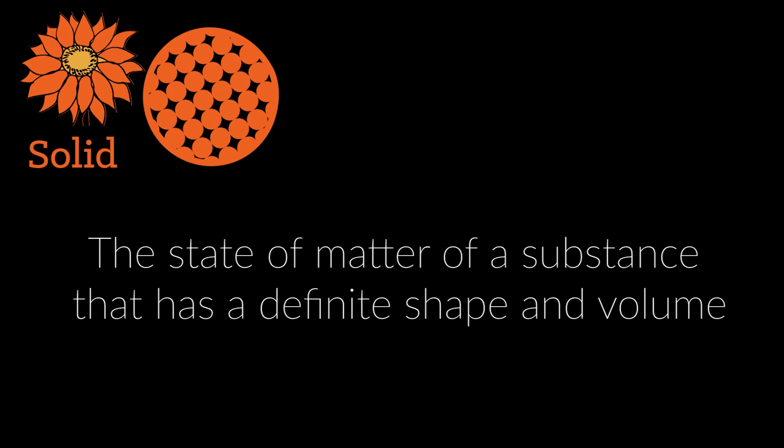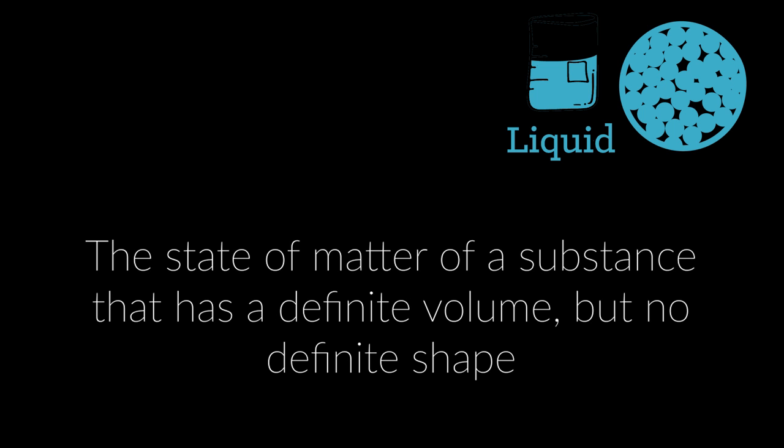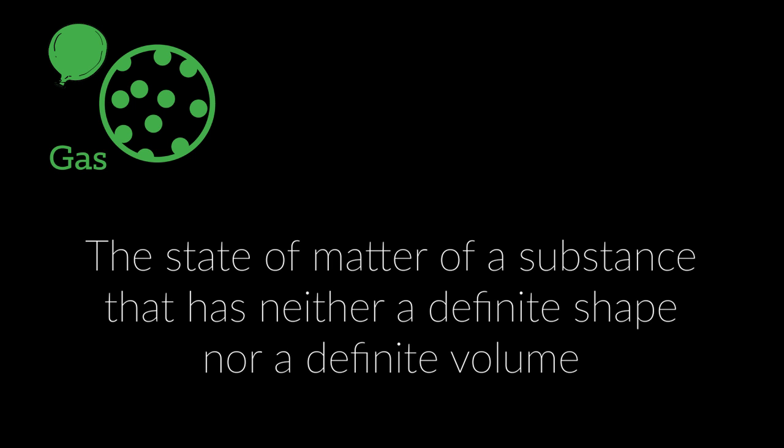Solid is the state of matter of a substance that has a definite shape and volume — for example, a sugar cube. Liquid is the state of matter of a substance that has a definite volume but no definite shape — for example, water. Gas is the state of matter of a substance that has neither a definite shape nor a definite volume — for example, oxygen.